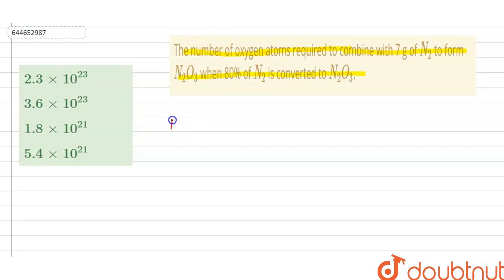First of all, we have to write the reaction: N2 reacts with O2 and it gives the formation of N2O3. This is the balanced reaction. Now we have to know the formula of number of moles.